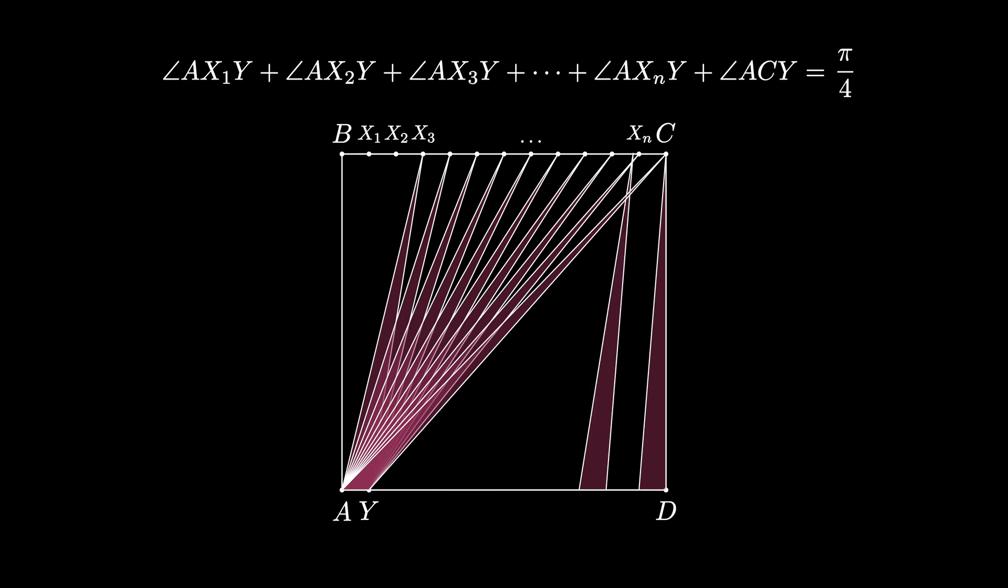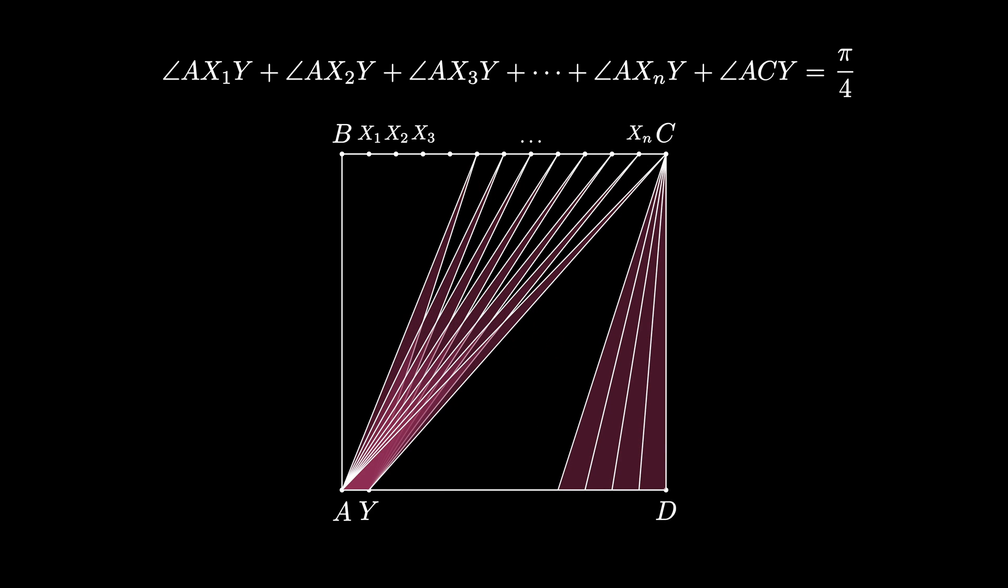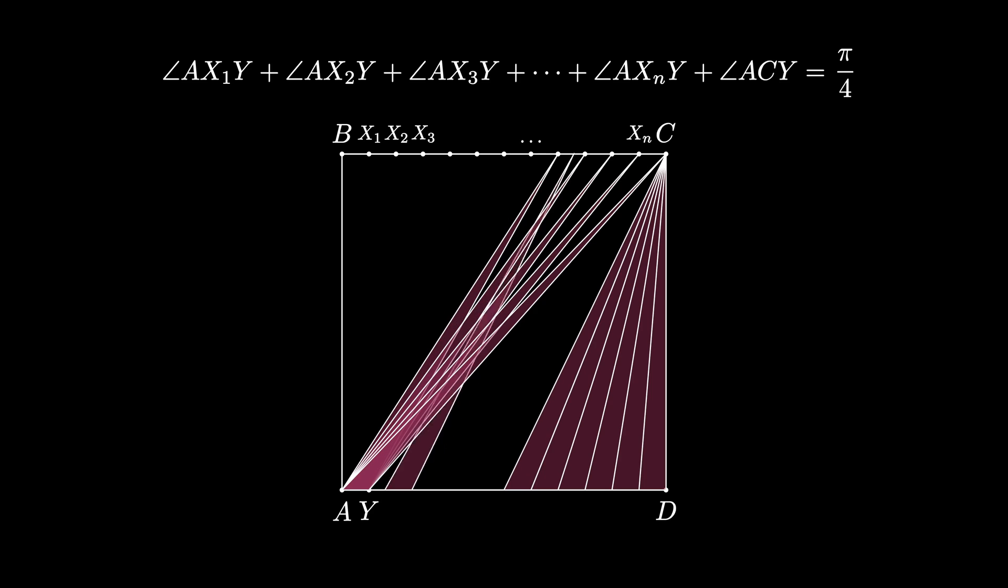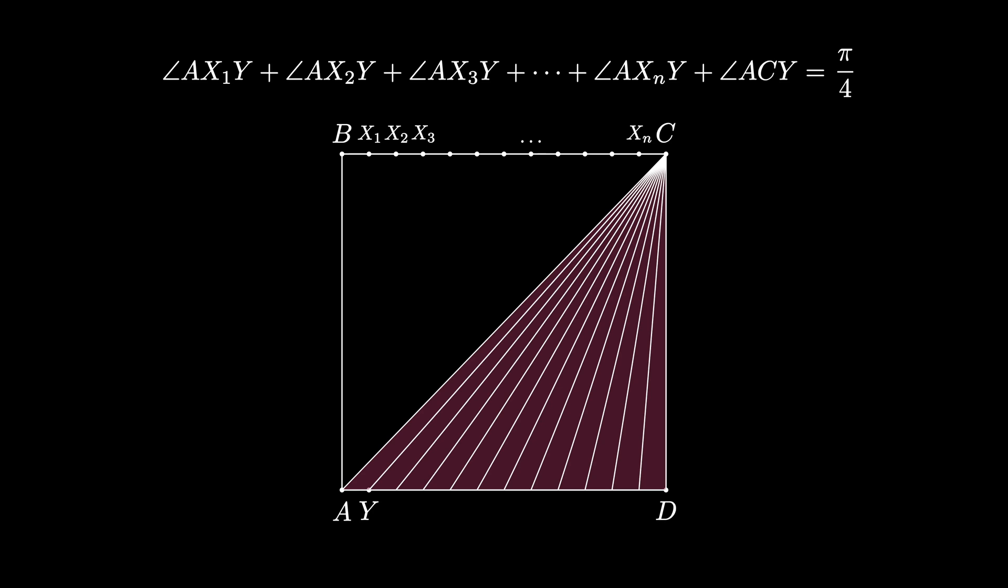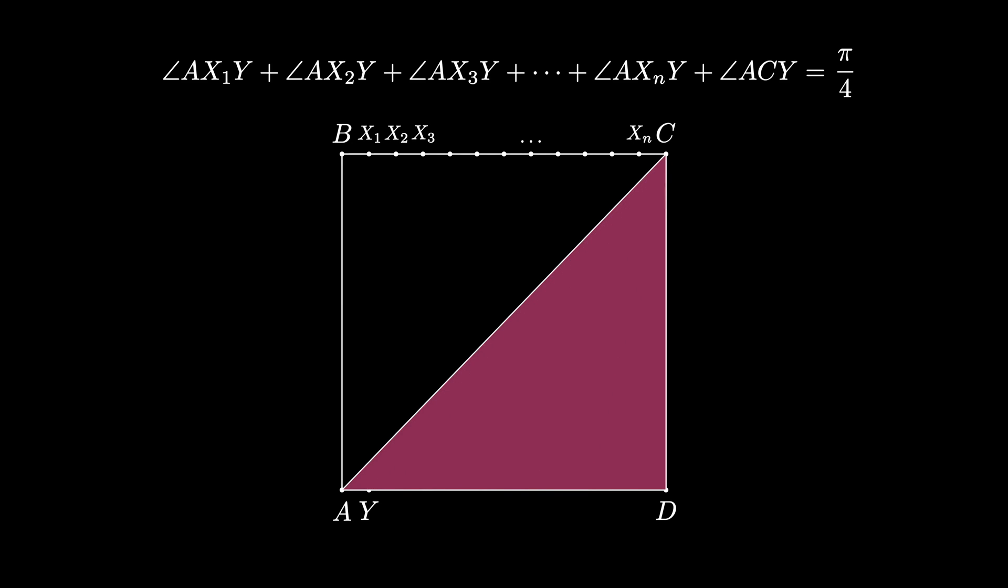As we slide them over, we see that they're going to fill in the entire length AD, and because the side lengths of successive triangles match, we see that we fill in the entire half square again, thus resulting once again in a full angle sum of π over 4.